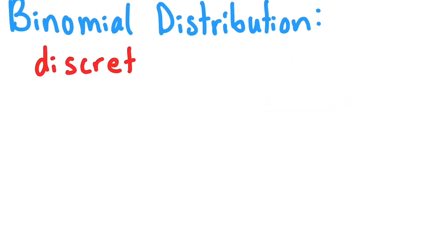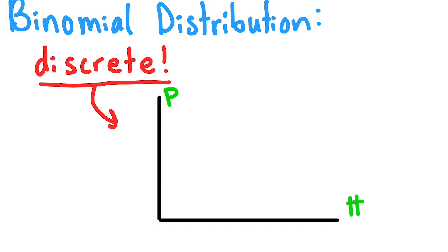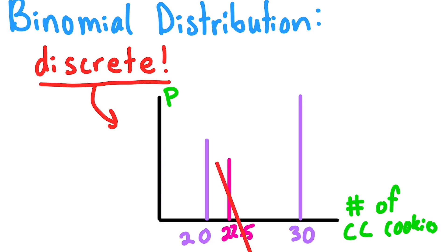The binomial distribution is a discrete distribution, which means it can only model integer outcomes. This is basically saying that it can tell you the probability of getting 20 or 30 chocolate chip cookies, but it couldn't tell you the probability of getting 22.5 chocolate chip cookies, because that just doesn't exist.